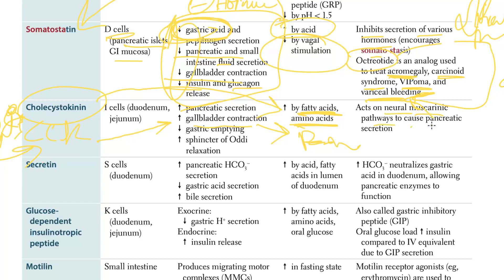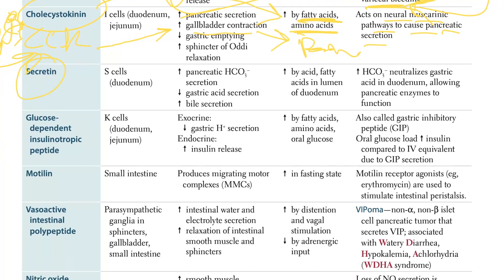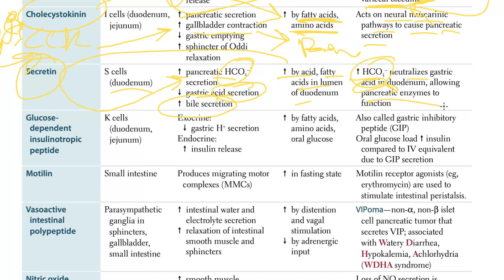CCK also works via an axonal neuronal muscarinic pathway to cause pancreatic secretion. Now, secretin - from S cells in the duodenum - increases pancreatic bicarbonate secretion and decreases acid. It also increases bile secretion. It is stimulated by acids and fatty acids in the duodenal lumen. The bicarbonate neutralizes gastric acid in the duodenum, allowing pancreatic enzymes to function.